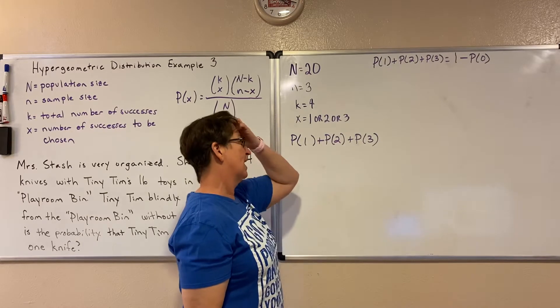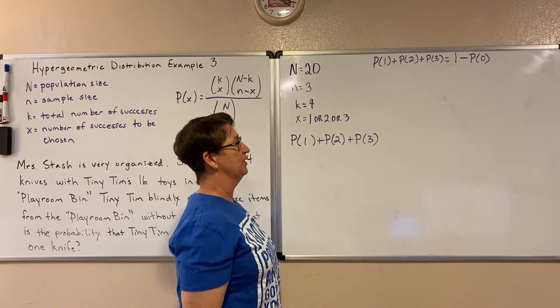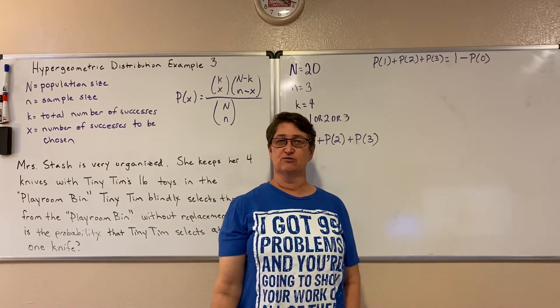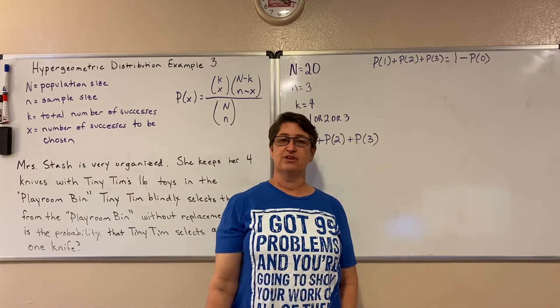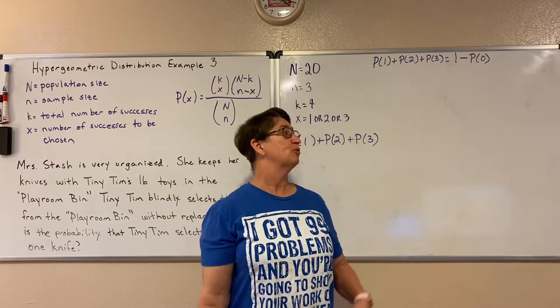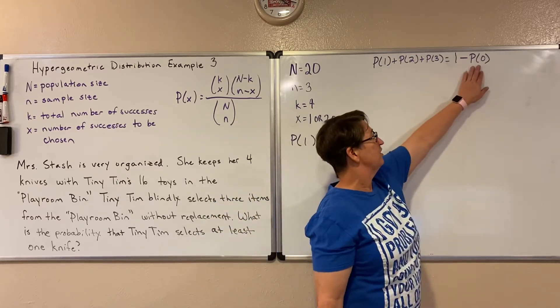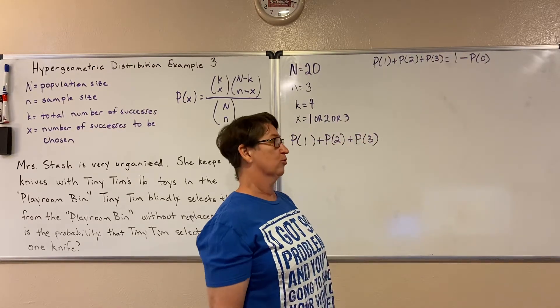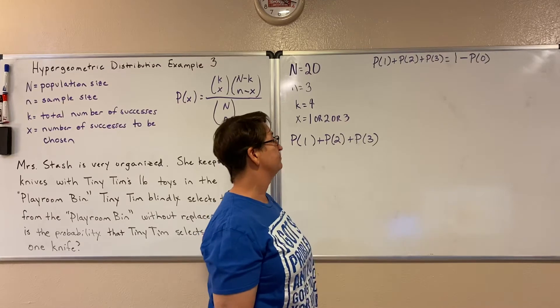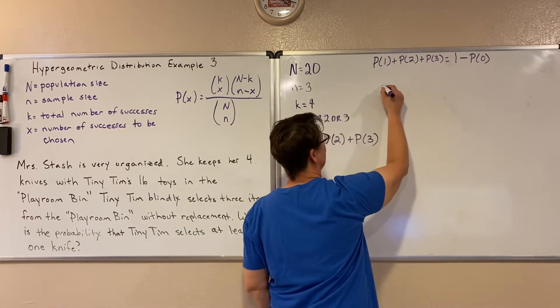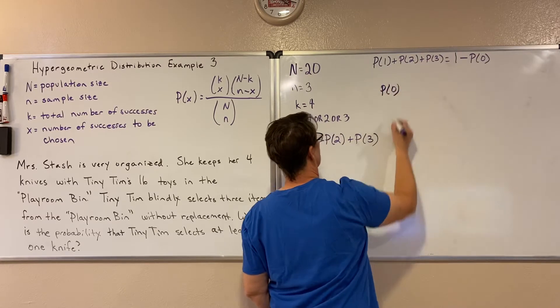And so if we just subtract that from one, we'll get that probability. It's kind of like when the weatherman tells you there's a 60% chance of rain, the complement then is that there's a 40% chance that it won't rain. So we can take and subtract the complement to get the probability that it won't rain or that he gets at least one.